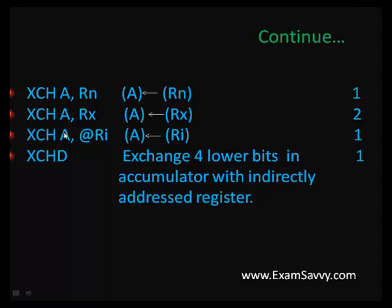Another example is XCHD A, @Rn — here we are moving register contents to the accumulator using indirect addressing mode. The final one is Exchange D, where only the 4 lower bits are exchanged between the register and the accumulator. This also uses indirect addressing mode to access internal or external RAM memory, and the byte size is 1-byte.